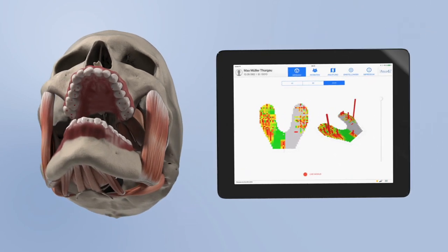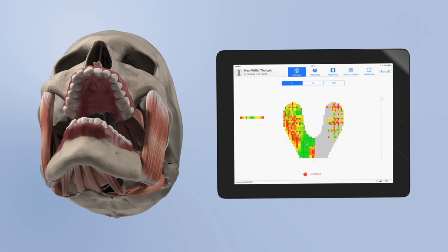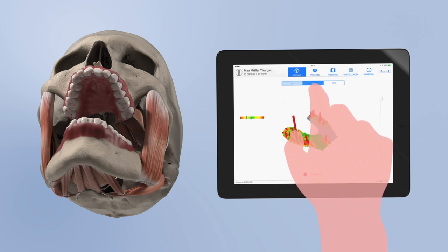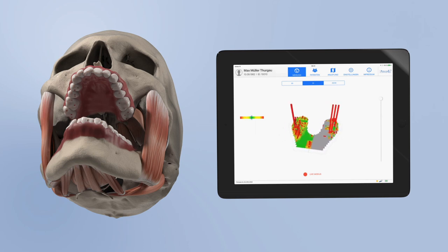The data of the occlusal masticatory distribution is being transferred to an iPad and displayed live in the Occlusense app. The traditional color transfer on the occlusal surfaces of the patient facilitates the assignment of the high spots to the pressure graphs shown on the iPad.